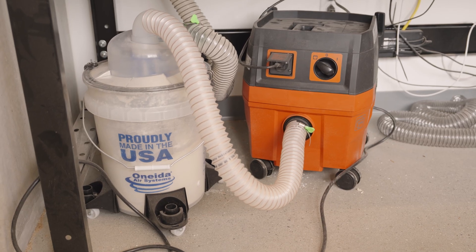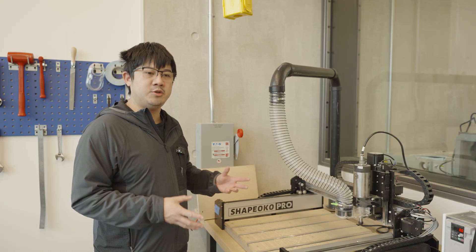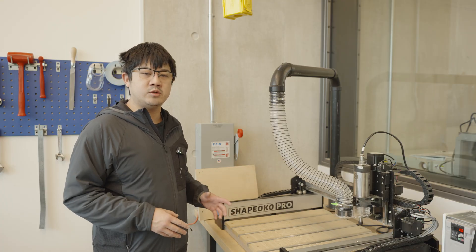Now, this tube right here is going to be our dust extraction system. We have a vacuum underneath the table that's going to suck up all the dust and chips you create to try to keep the environment clean as well as you safe.